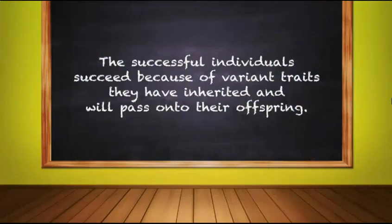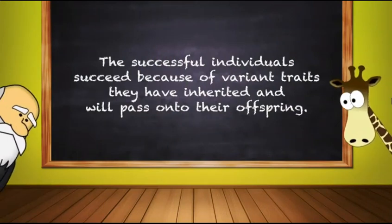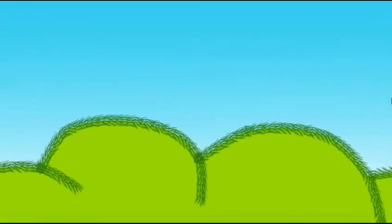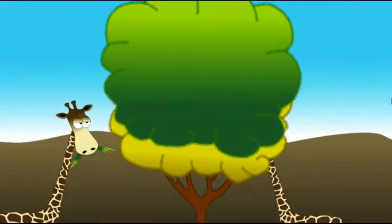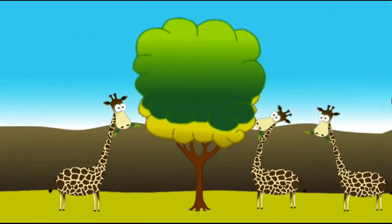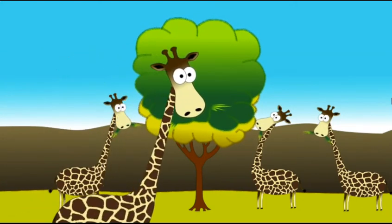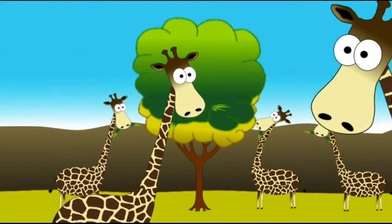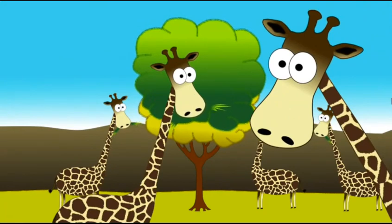Condition number four: the successful individuals succeed because of variant traits they have inherited and will pass on to their offspring. Giraffes with the longer neck advantage are in better health and able to pass this feature to their offspring. Because this trait is more successful, more individuals in the population have it. Over time, this process can result in populations that specialize for particular environments and may eventually result in the emergence of new species. Natural selection is an important process, though not the only process, by which evolution takes place within a population.